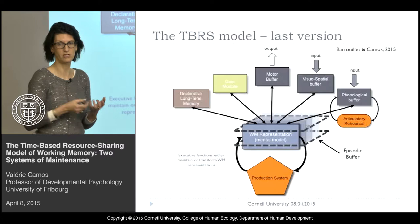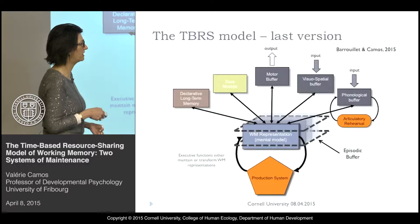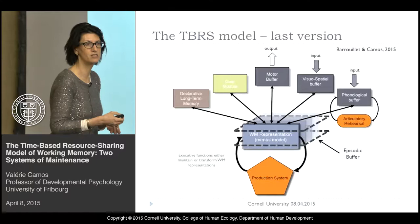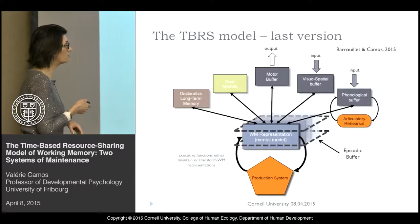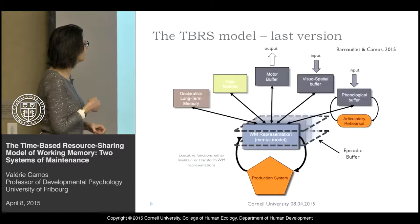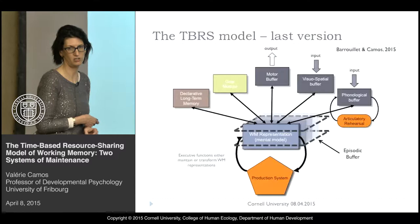Besides that, you have a phonological loop with a buffer and an articulatory rehearsal system, which is independent. We also believe there is a visual-spatial buffer, but without any domain-specific maintenance of information. There is a motor buffer — we are quite unclear on that — really inspired by ACT-R. And a goal model to direct the activity of this executive loop. The idea is that declarative long-term memory will feed and build up these representations — something we are currently working on.